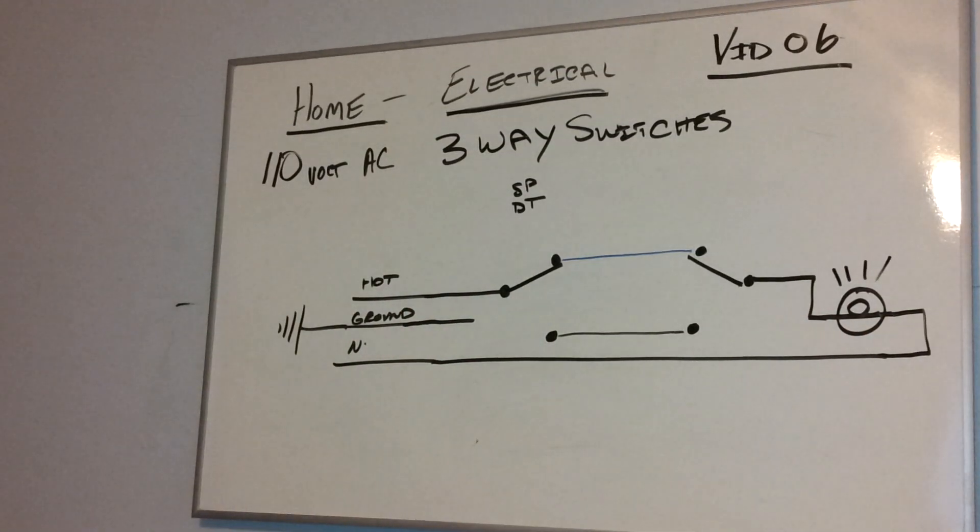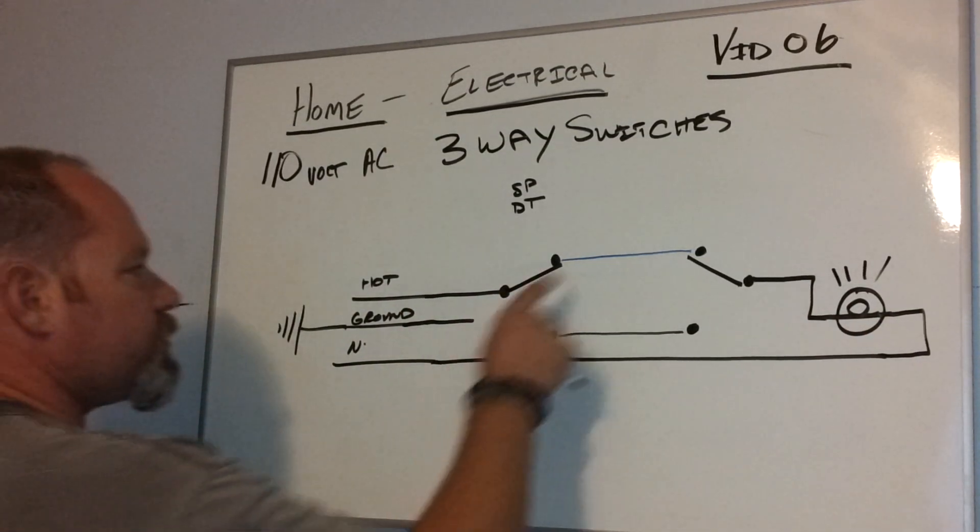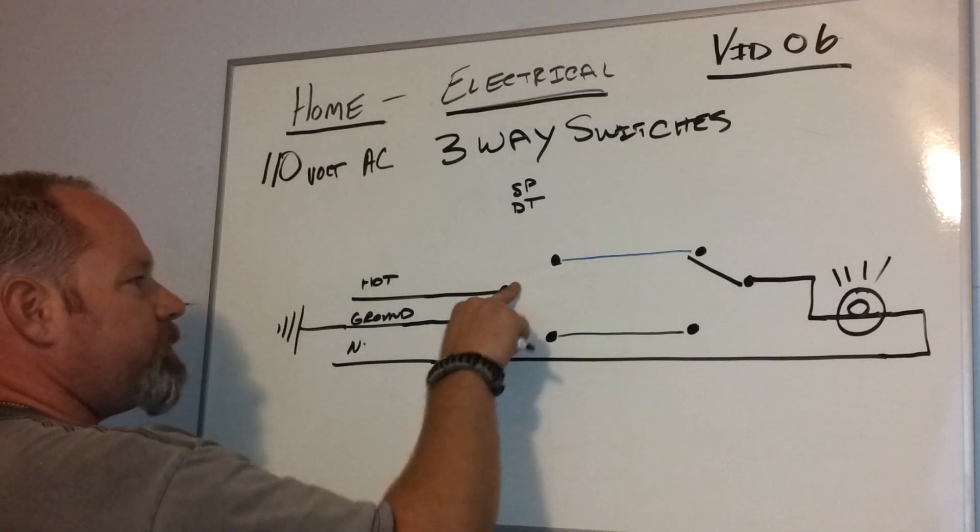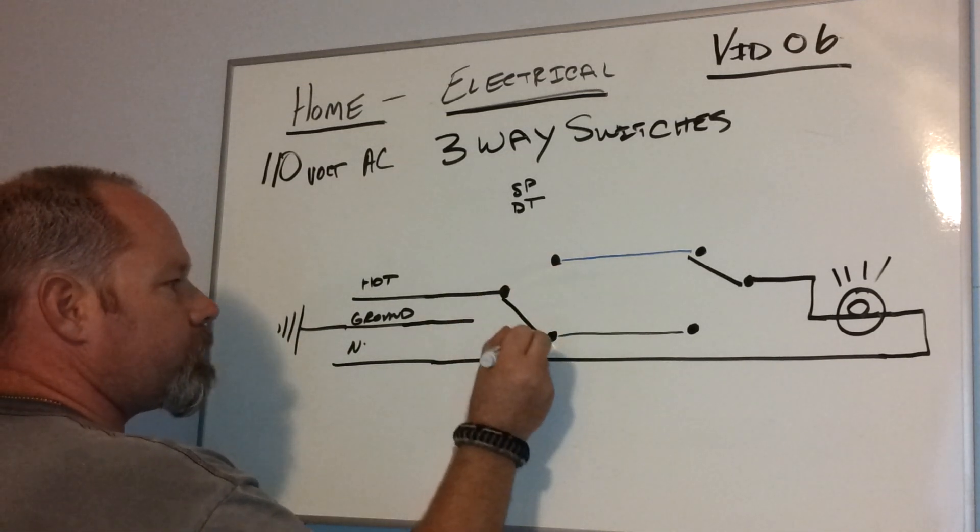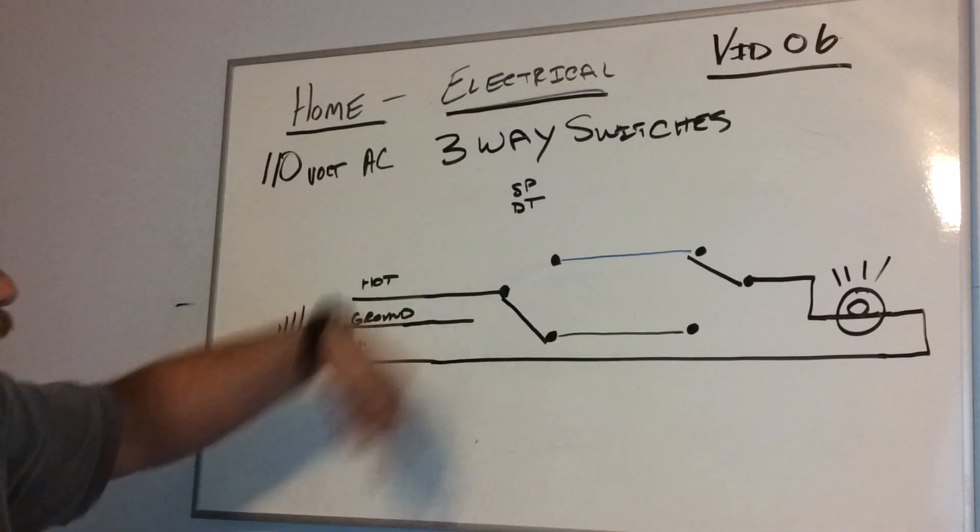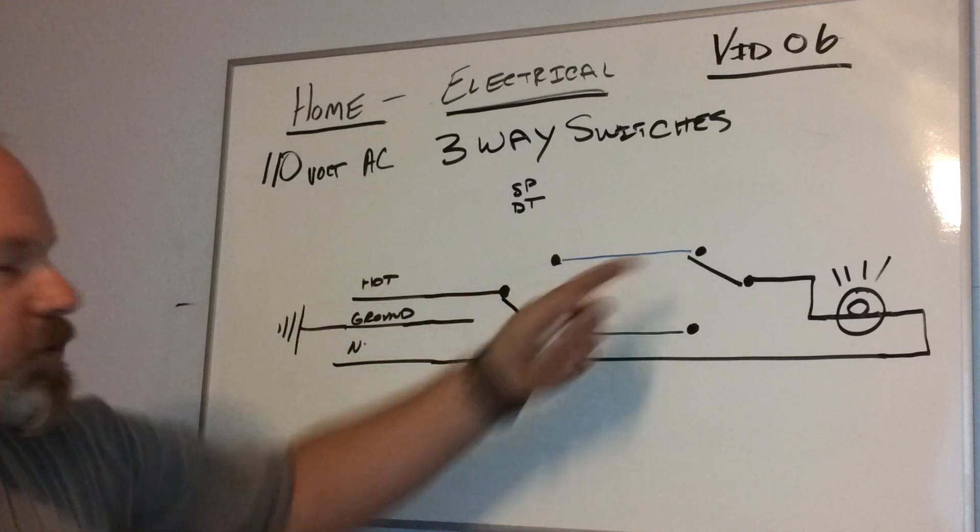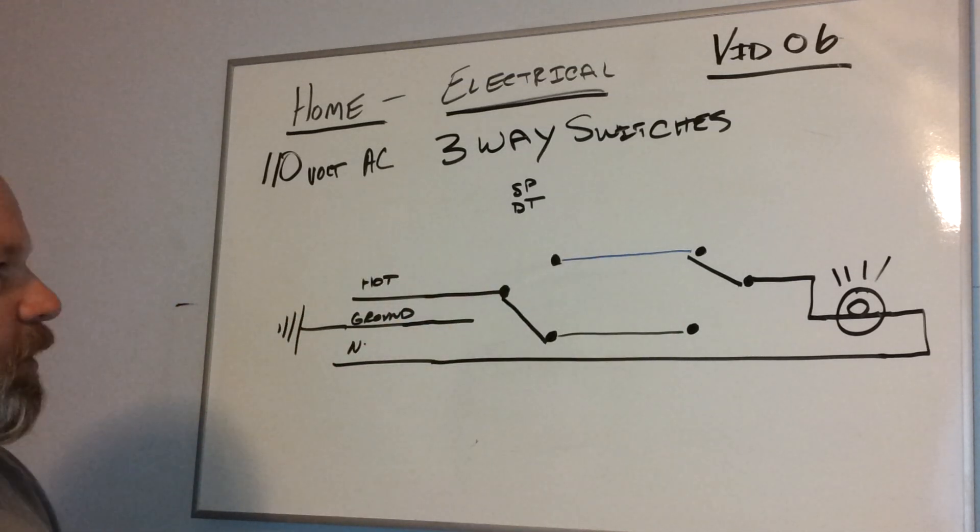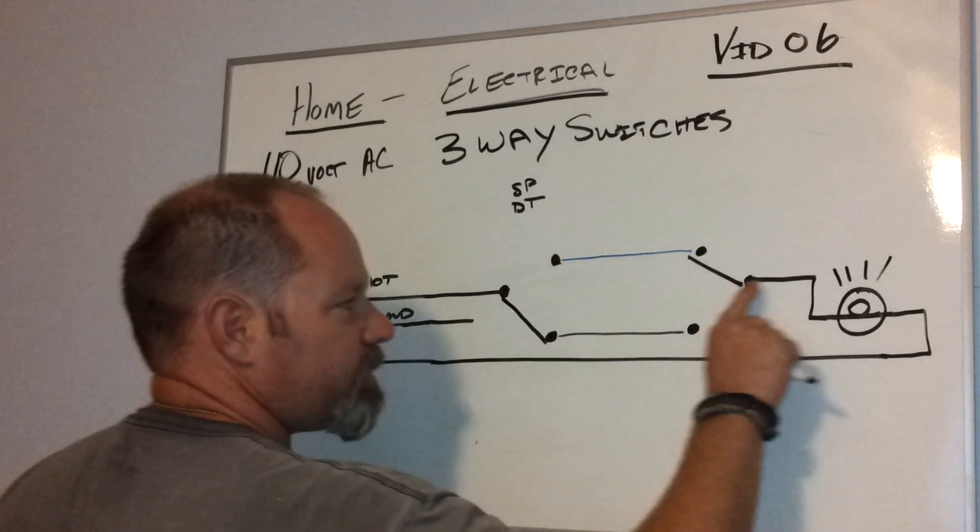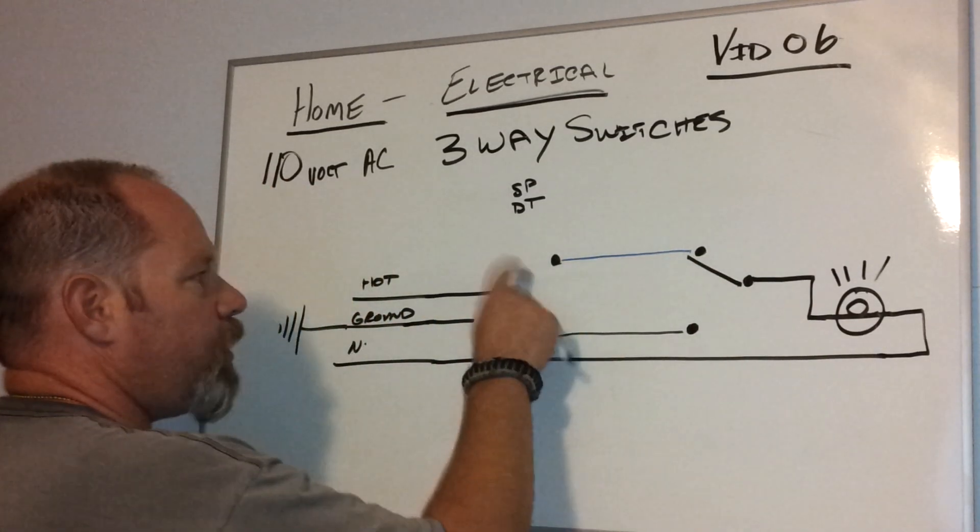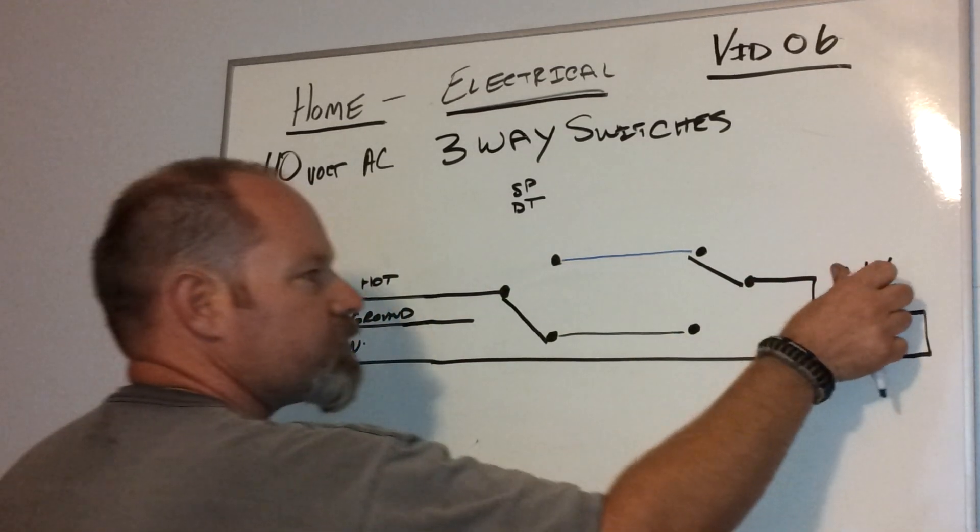Now let's go ahead and flip this switch to the off position. We flip the switch down. Now, the power's coming in, and it stops. It's sitting at the other switch, waiting for it to happen. But now, we do not have a complete circuit to the light. We have an open, which means the light goes off.